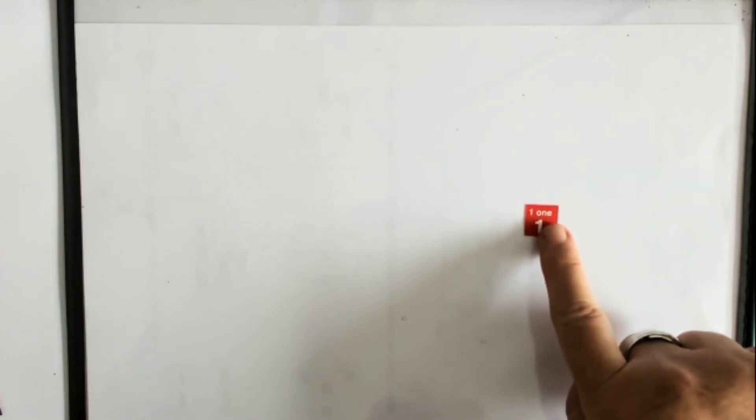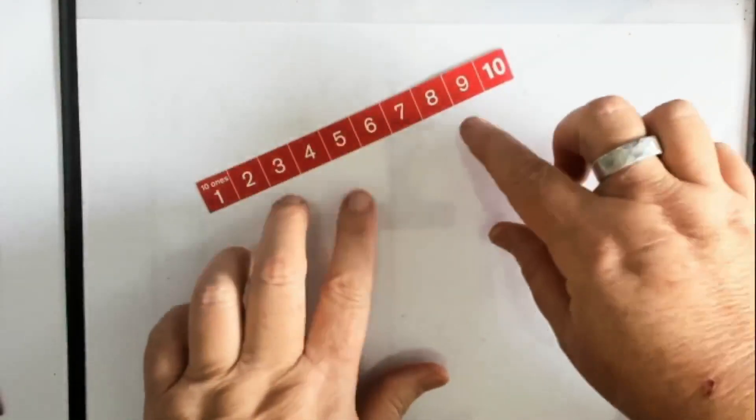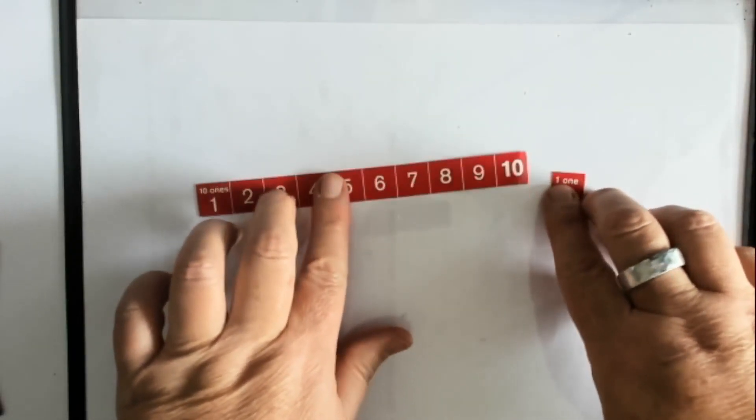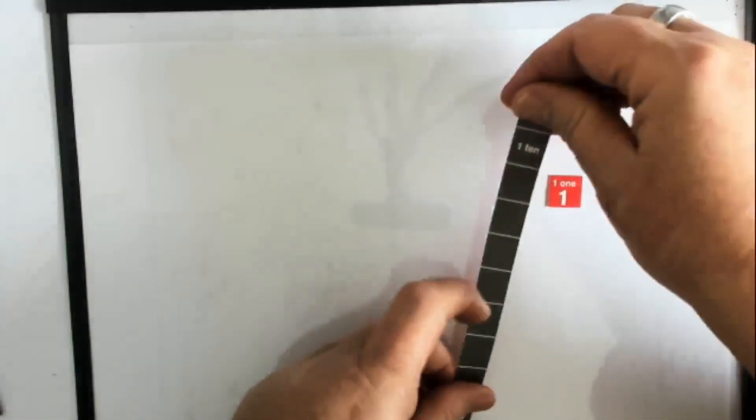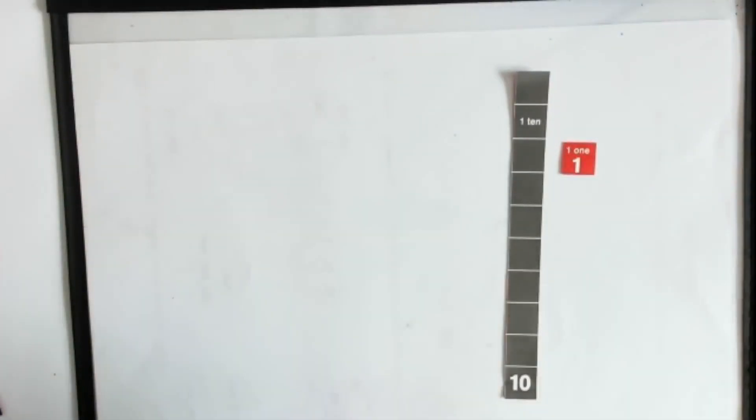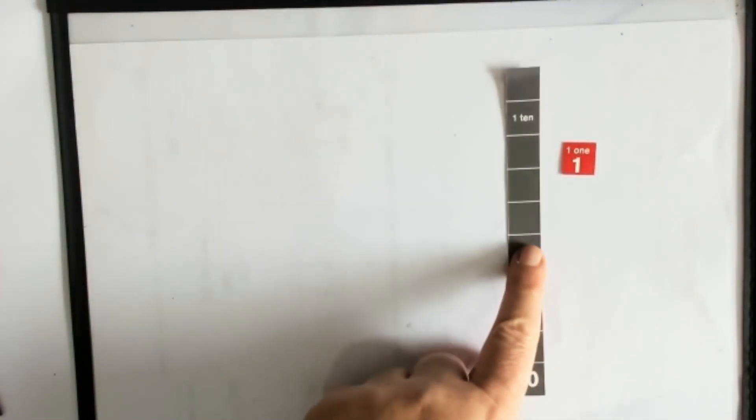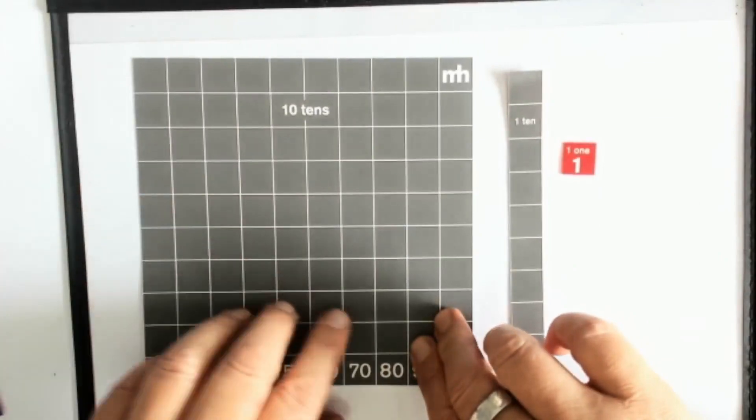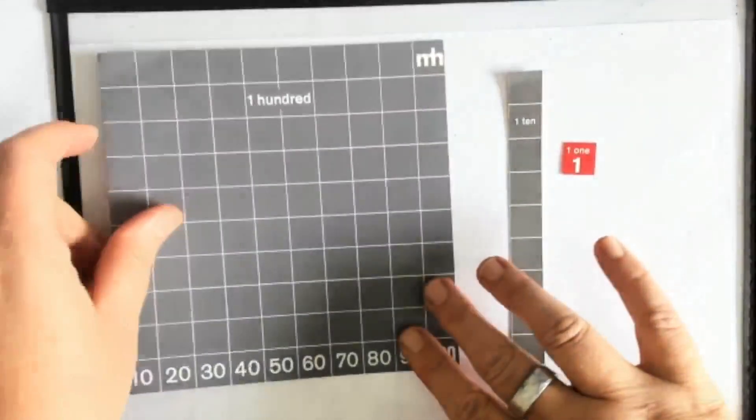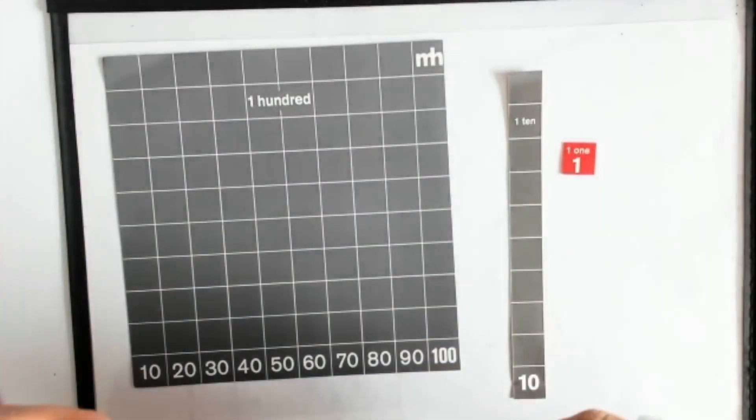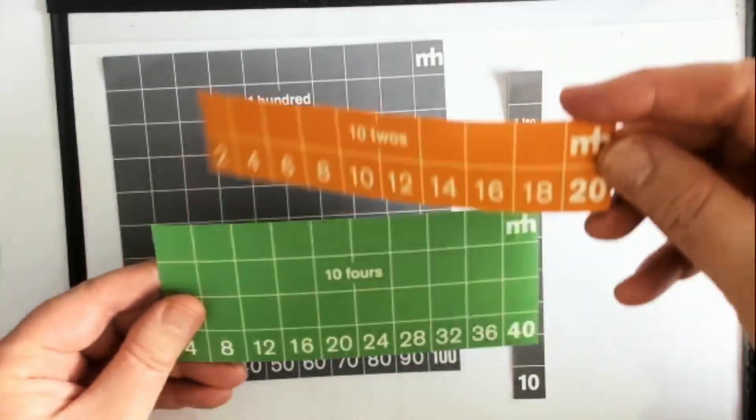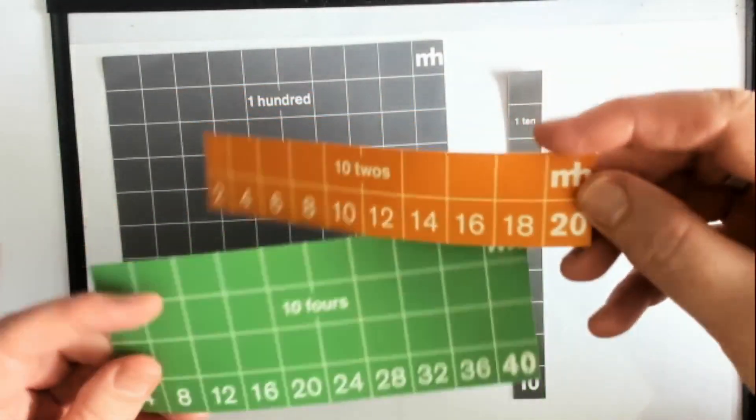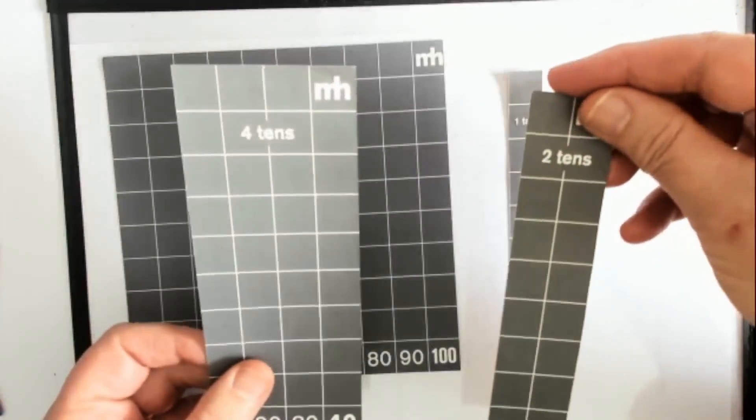So the big idea is that when I have a one, I can have ten of these ones and I rename it into one ten. Likewise, I can rename ten tens into one hundred. And actually, it doesn't matter what size unit or number we are using. Whenever I've got ten of them, I can rename and regroup them.